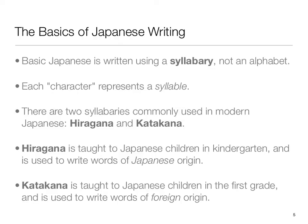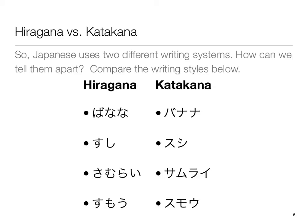Katakana, the secondary system, is taught to Japanese children in the first grade and is used to write words of foreign origin — that is to say, non-Japanese words. The words for chocolate, the word for donuts, and so on. These being non-Japanese words would normally be written in katakana.